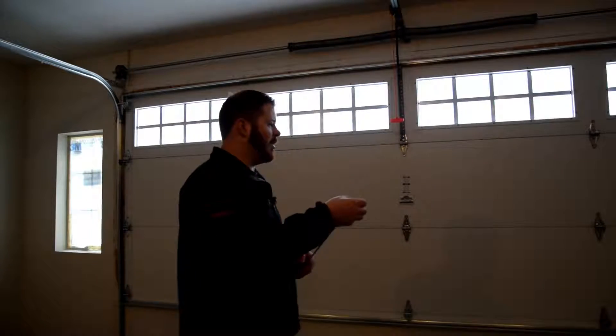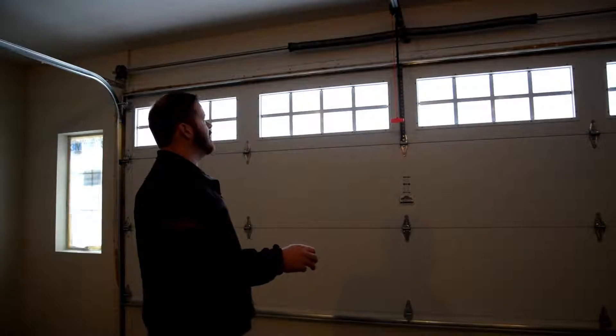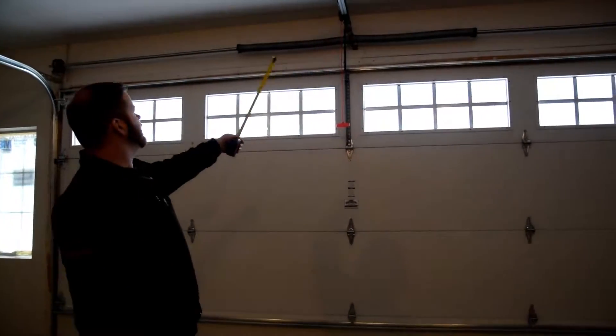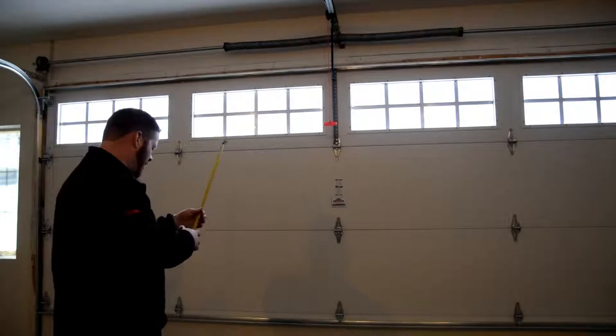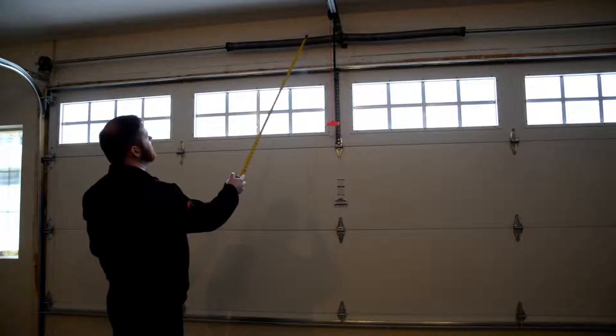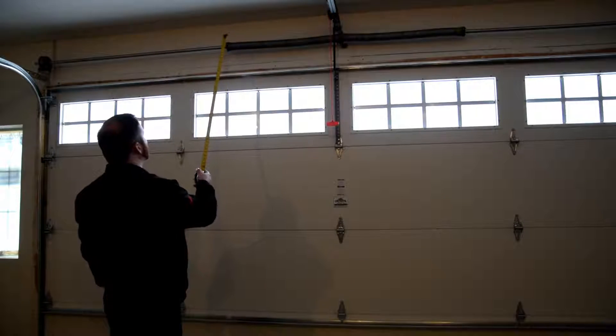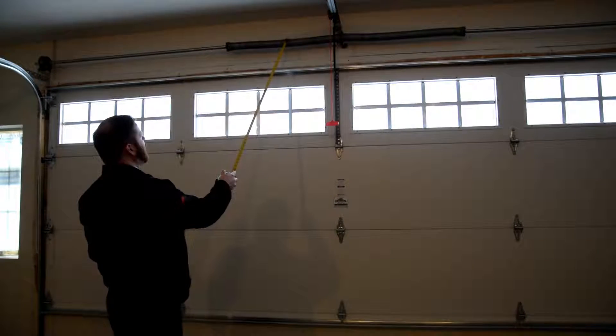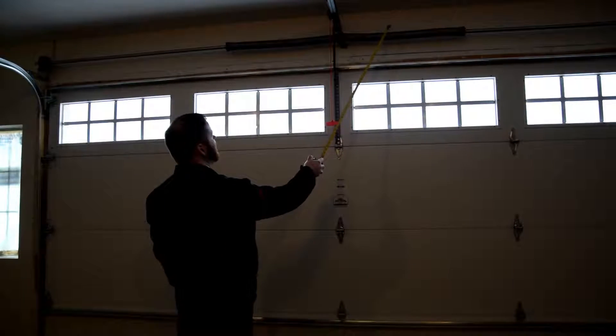This system here is pretty conventional of today's standards. This is a torsion system. You've got your torsion bar tube, which is right here, and your torsion springs sit on the tube itself. This is your left-hand torsion spring, and here's your right-hand torsion spring.